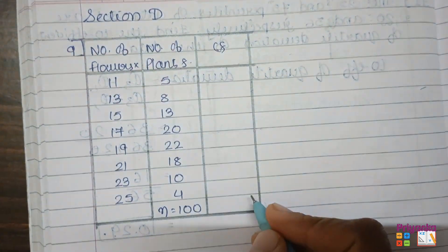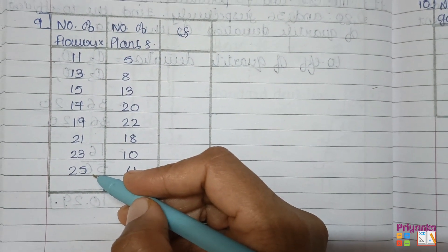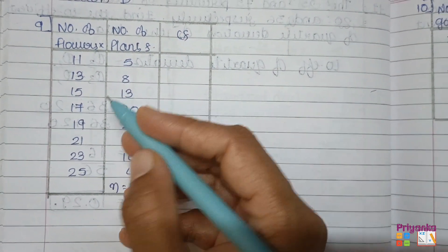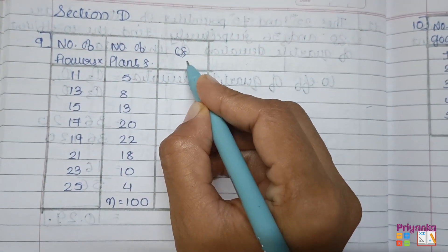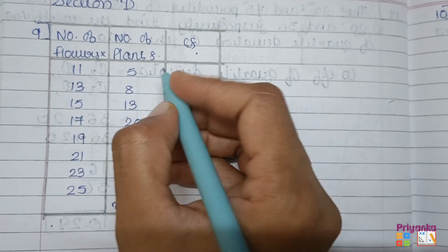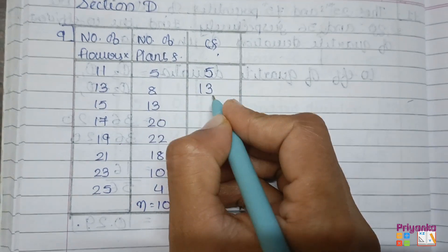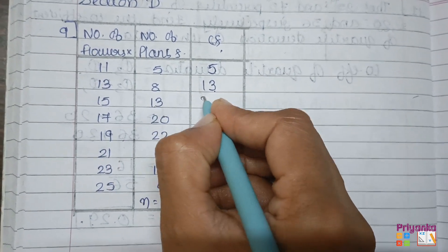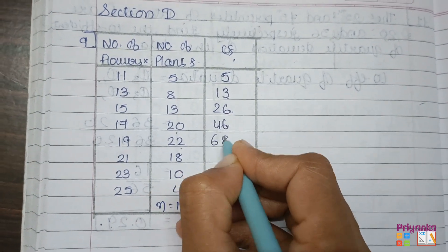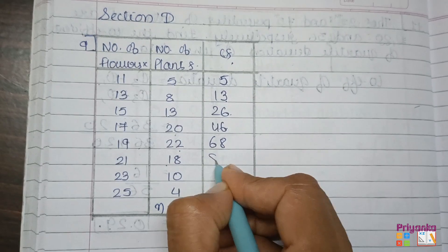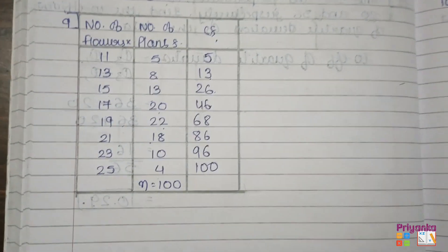As we are finding quartile deviation, we only need cumulative frequency. This is discrete information, so to find out quartile deviation we are going to use the formula n plus 1. First we will get ready with the cumulative frequency, which is just an addition of frequencies: 5, then 5 plus 8 equals 13, 13 plus 13 equals 26, 26 plus 20 equals 46, 46 plus 22 equals 68, 68 plus 18 equals 86, 86 plus 10 equals 96, and 96 plus 4 becomes 100.